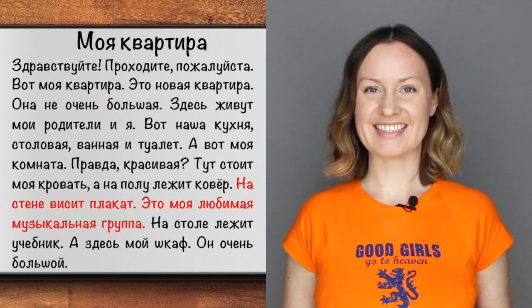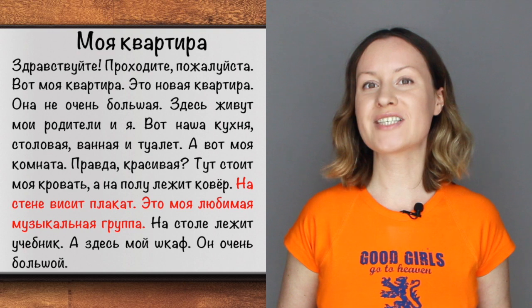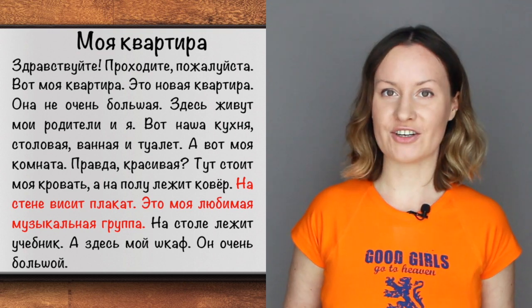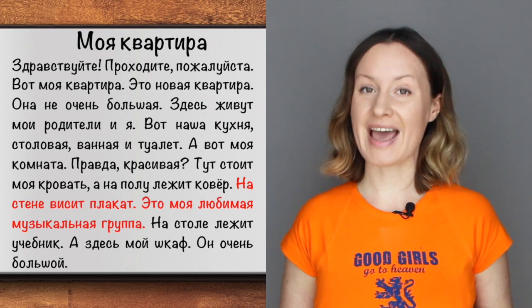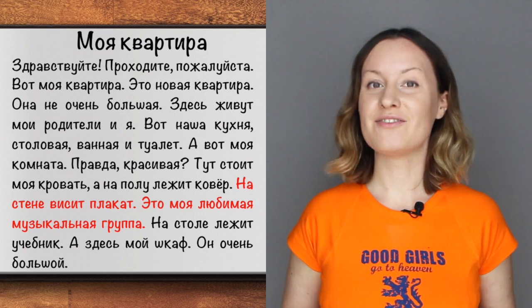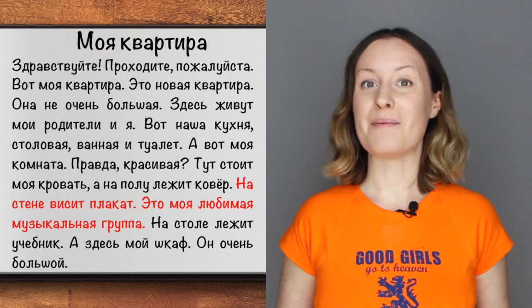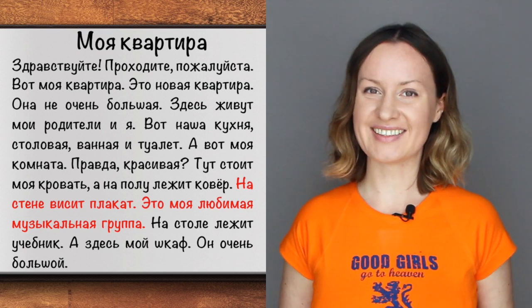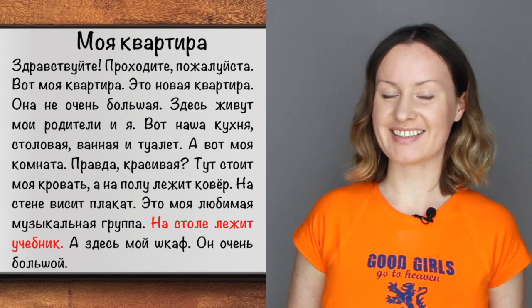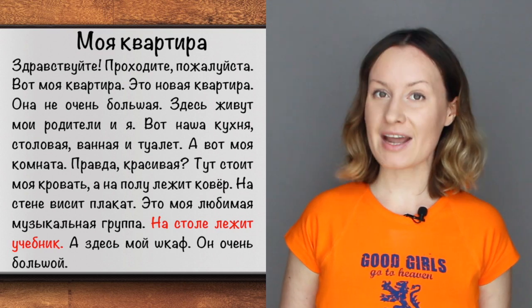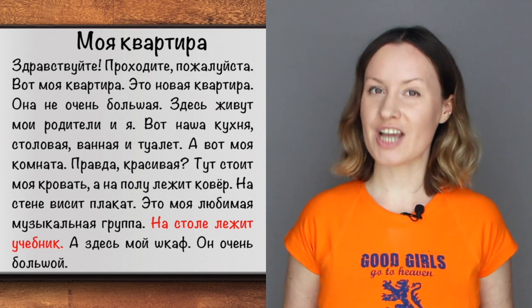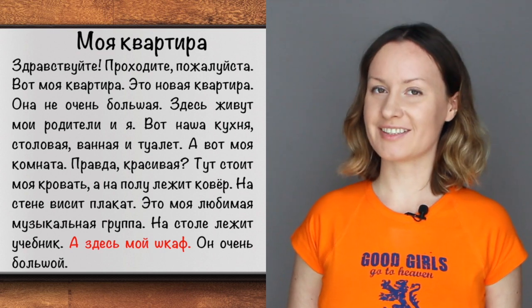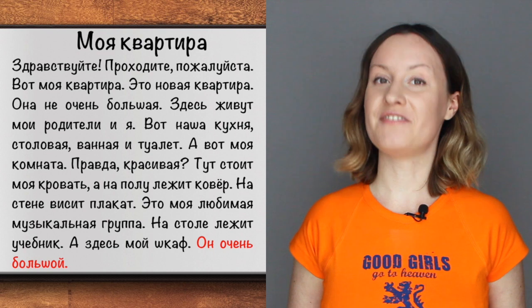На стене висит плакат. Это моя любимая музыкальная группа — 'On the wall there is a poster. This is my favorite music band.' На столе лежит учебник — 'On the table there is a textbook.' А здесь мой шкаф — 'And here is my closet.' Он очень большой — 'It's very big.'